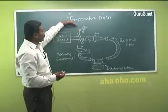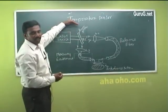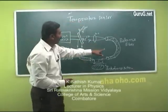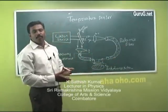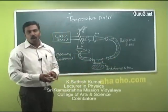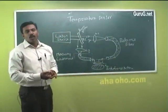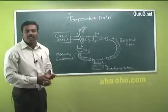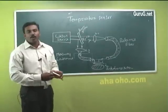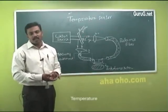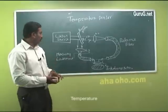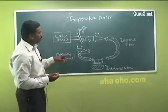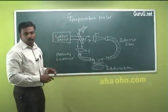This temperature sensor works under the principle of interference. An interference pattern is produced between the light emerging from the reference beam and the light emerging from the measurable optical fiber, due to variation in path difference. With the help of this interference pattern, we can accurately measure the change in temperature and pressure.